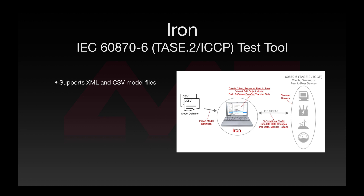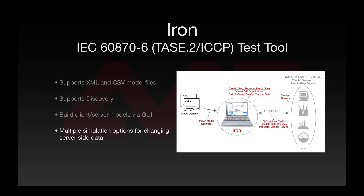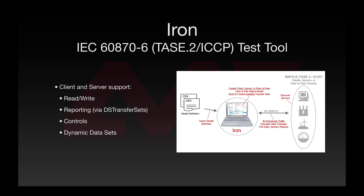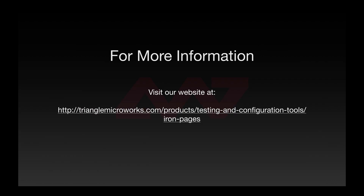IRN supports multiple methods for defining client and server models. For example, it supports both XML and CSV model files, as well as discovery. It supports building new client and/or server models via a GUI. It supports multiple simulation options for changing server-side data. The IRN client and server support read and write, reporting via DS transfer sets, controls, and dynamic data sets.